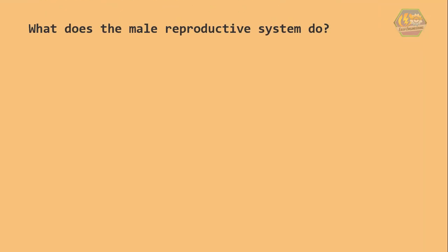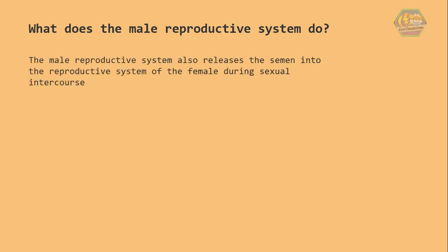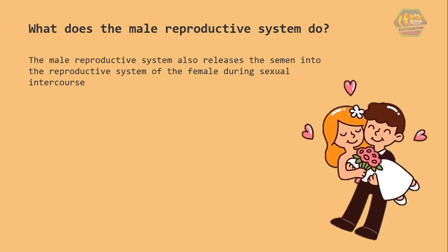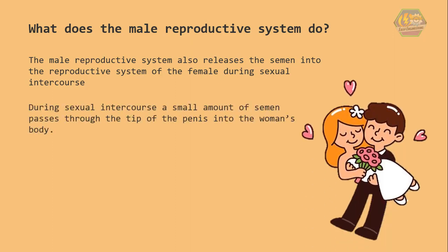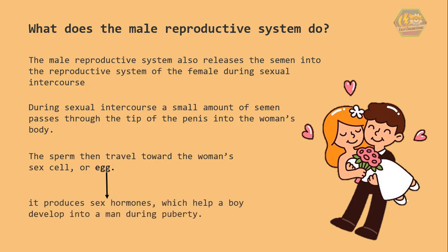What does the male reproductive system do? Basically, the male reproductive system makes semen and also releases the semen into the reproductive system of the female during sexual intercourse. Remember, only grown-ups and married people like your mom and dad can do these things. During sexual intercourse, a small amount of semen passes through the tip of the penis into the woman's body. The sperm then travels toward the woman's sex cell or egg. Lastly, it produces sex hormones which help a boy develop into a man during puberty.